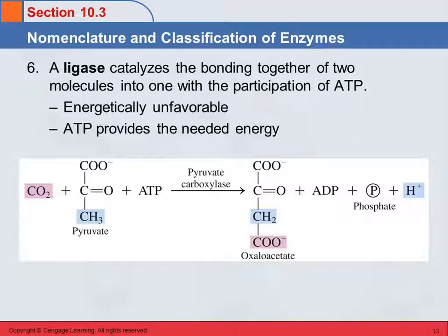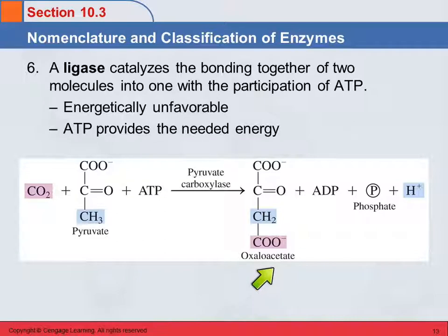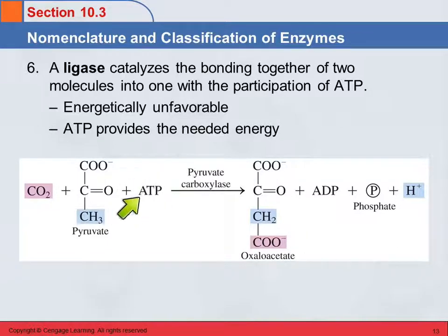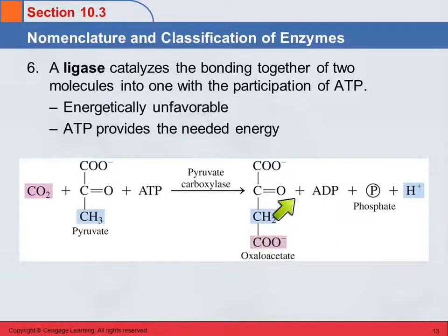Ligase catalyzes the bonding of two molecules into one. For example, pyruvate and carbon dioxide can combine to form oxaloacetate. This is not energetically favorable — it requires energy, which comes from ATP. The phosphate is not transferred to the product; it's removed from ATP, and the energy released by that removal drives the reaction, adding the CO2 group to the pyruvate. This enzyme is pyruvate carboxylase.